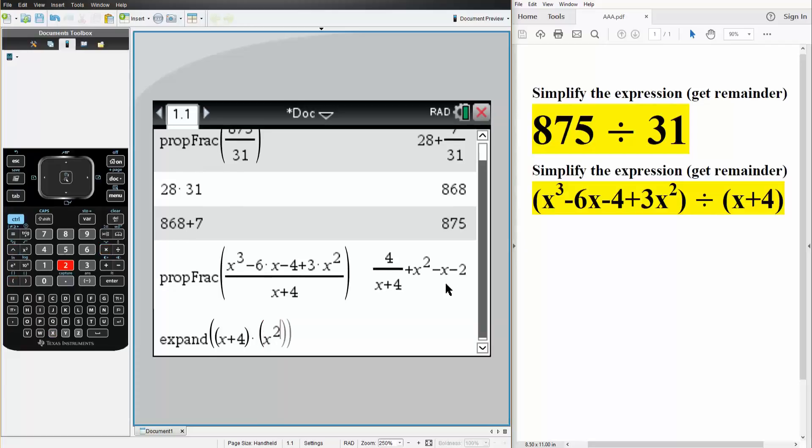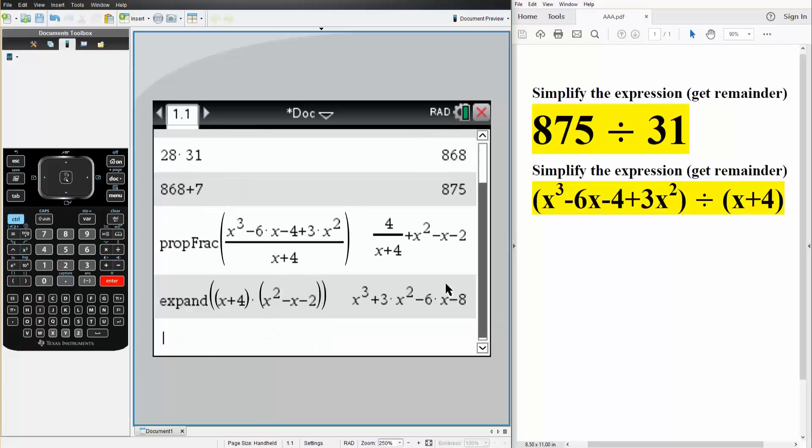I would get x cubed plus 3x squared minus 6x minus 8. And here I have minus 4. And so essentially, I need to add 4 and divide by x plus 4. And this is why, in this problem, the remainder was 4.